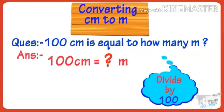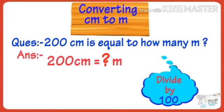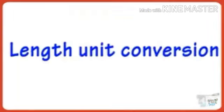Let's see some examples. 100 centimeters into meters: 100 divided by 100 equals 1 meter. 200 centimeters: 200 divided by 100 equals 2 meters. So 200 centimeters is equal to 2 meters. Hope all of you understood what I taught today. Thank you all.